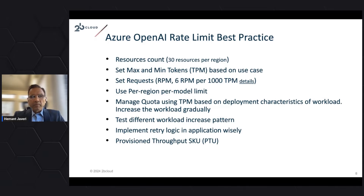These are the rate limiting best practices. You want to ensure your resource count per region is limited to what's recommended. Set the max and minimum tokens based on the use case. Use a per-region model, set the request rate to 6 RPM per thousand tokens per minute. Manage your quota as a representation of your workload, use different workload increasing patterns, and implement retry logic wisely. You can also provision throughput — Azure OpenAI allows you to provision your throughput based on a calculator.